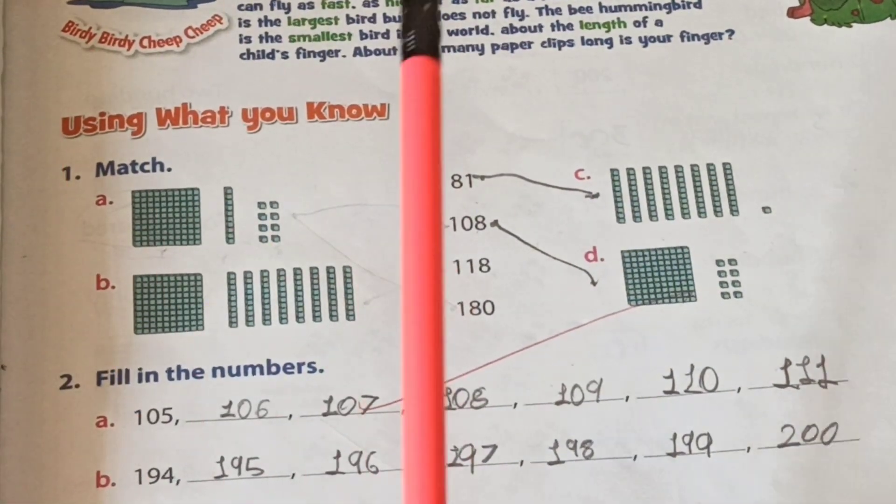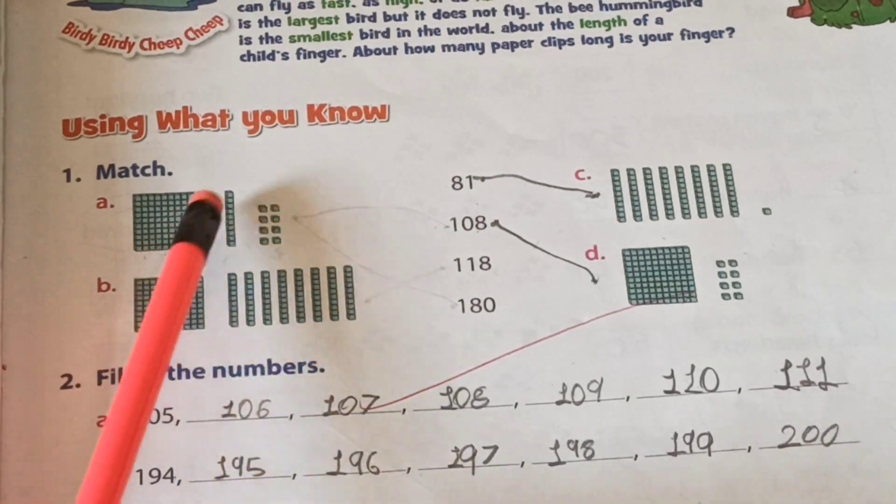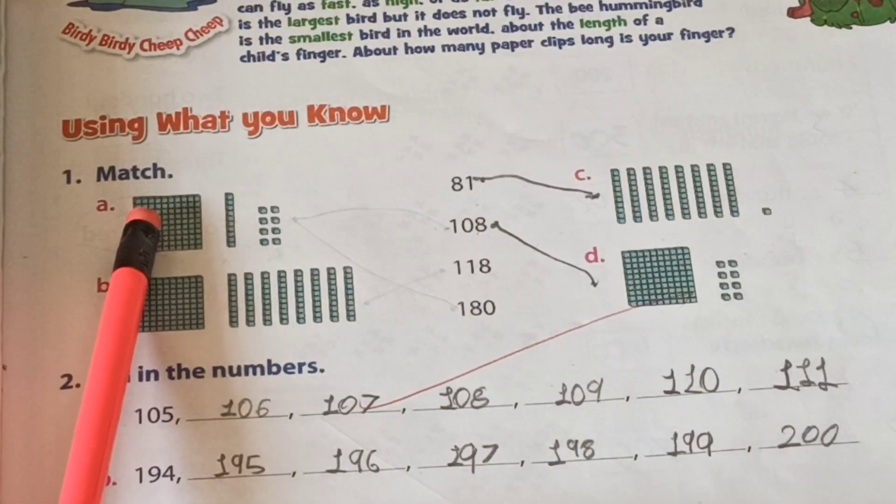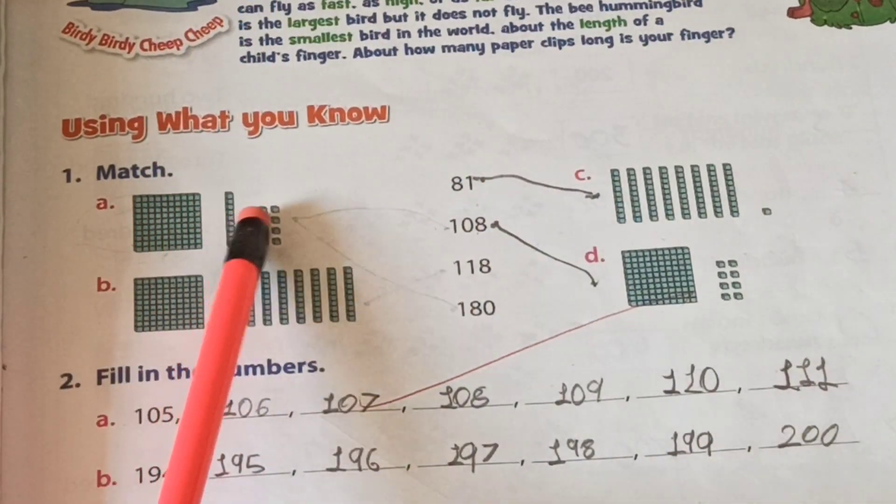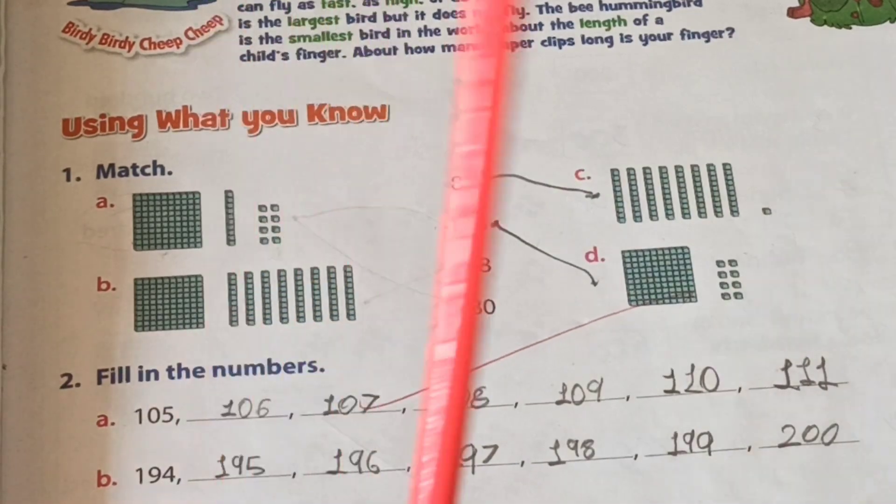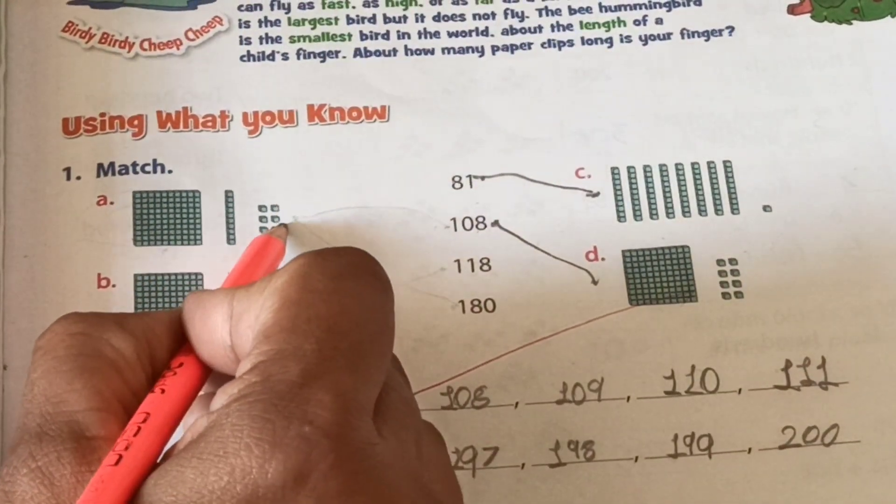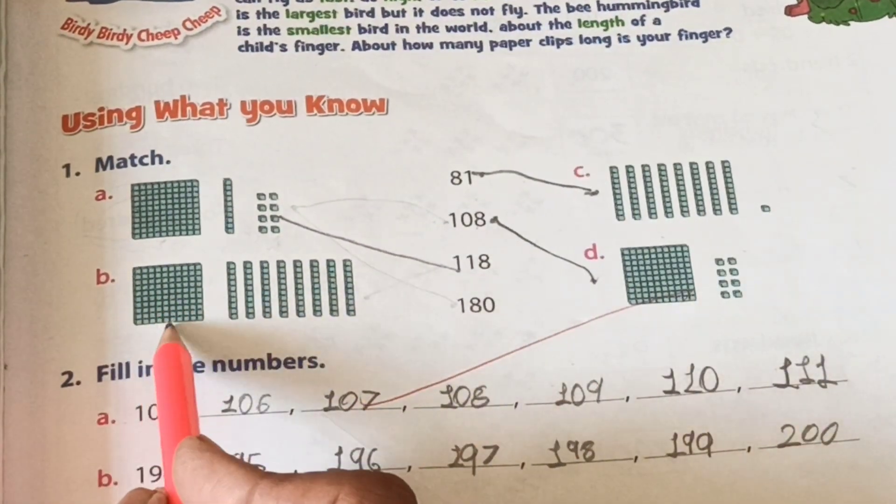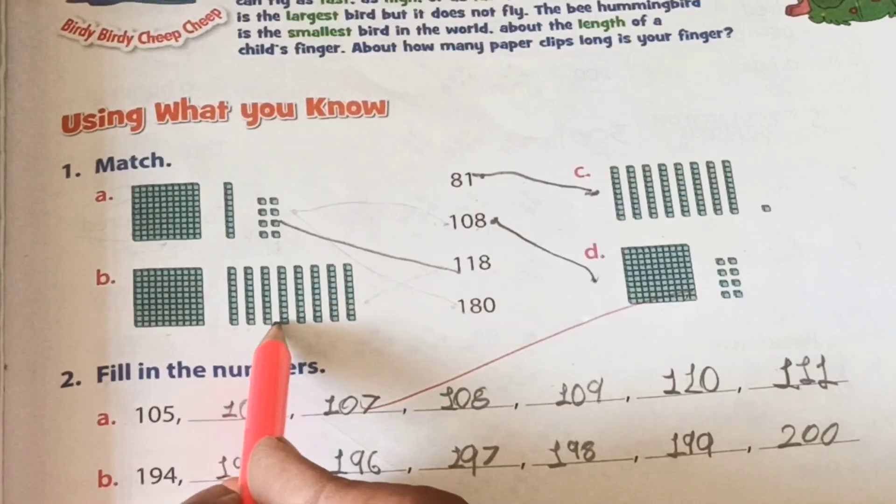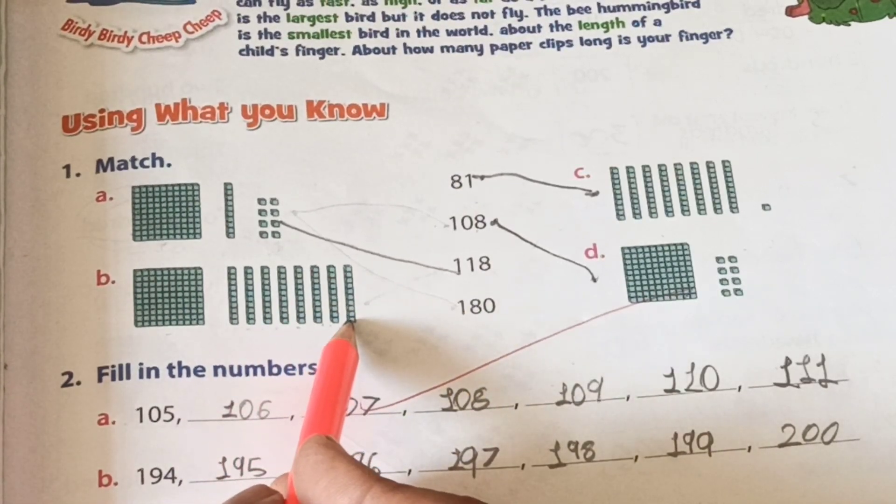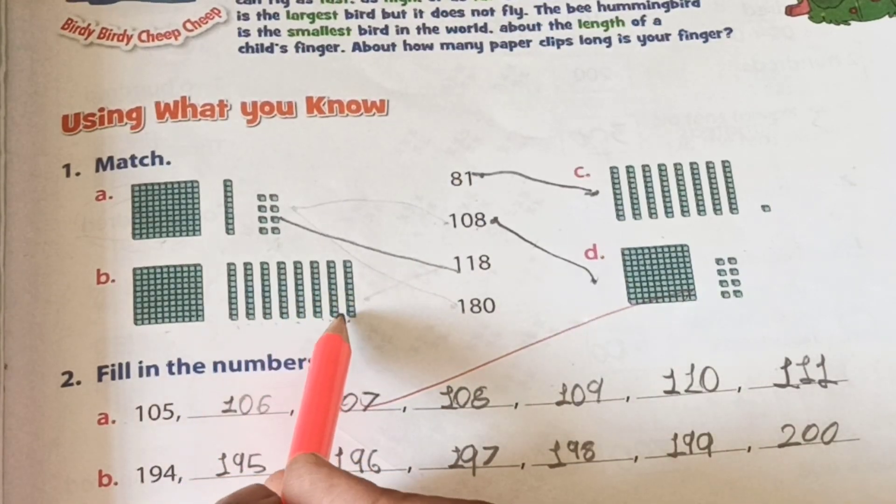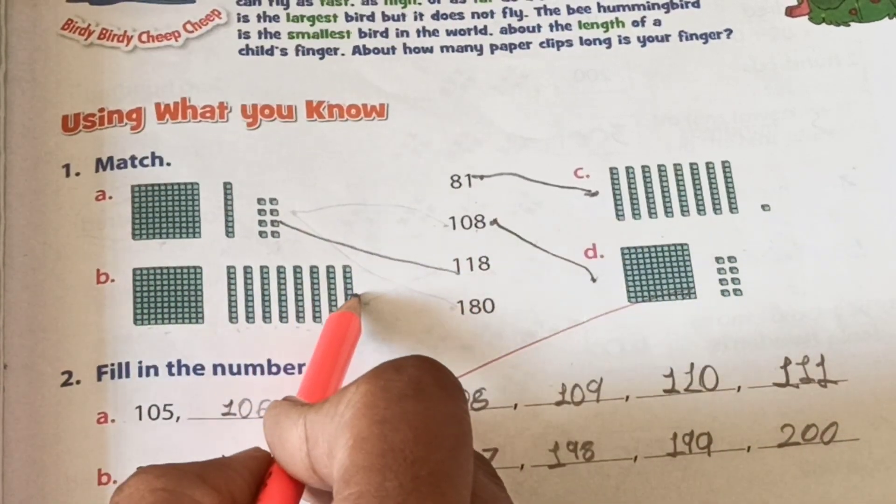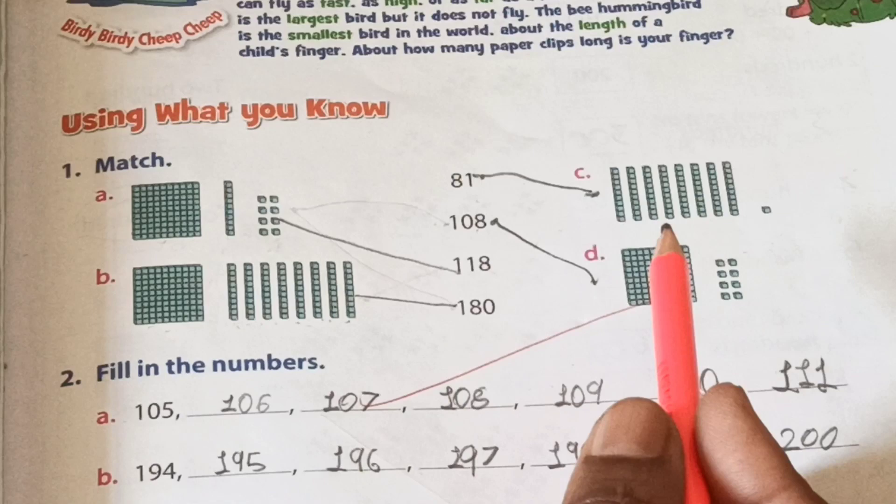We match here. One hundred, one ten and 8 ones means 118. One ten and 8 means 18. So we match this one: 118. Next, B. One hundred. One, two, three, four, five, six, seven, eight tens. How many? Eight tens means 80. And this one 100. So match here: one hundred eighty.